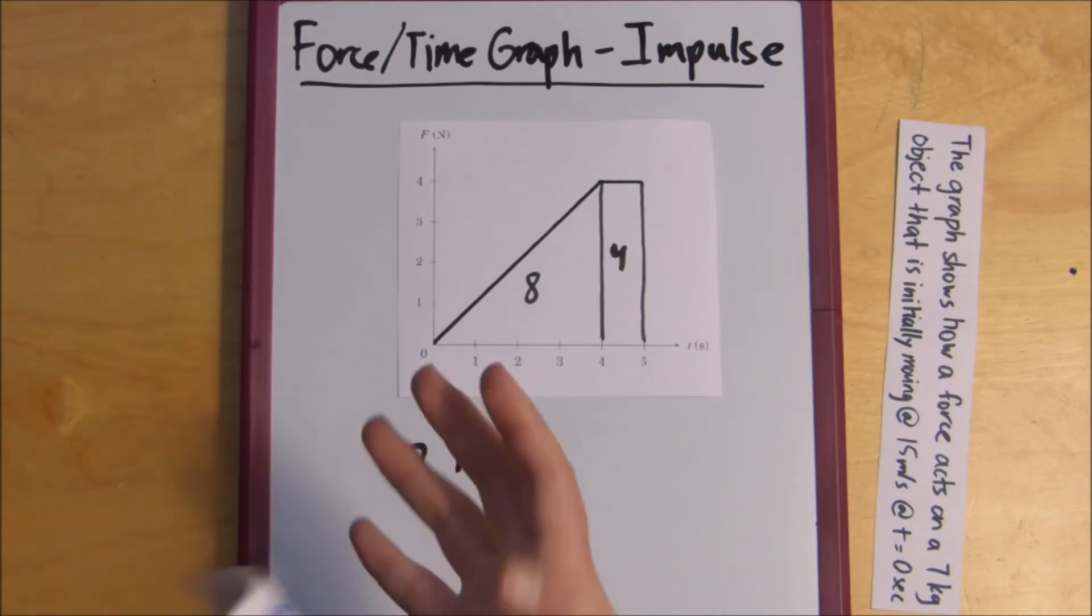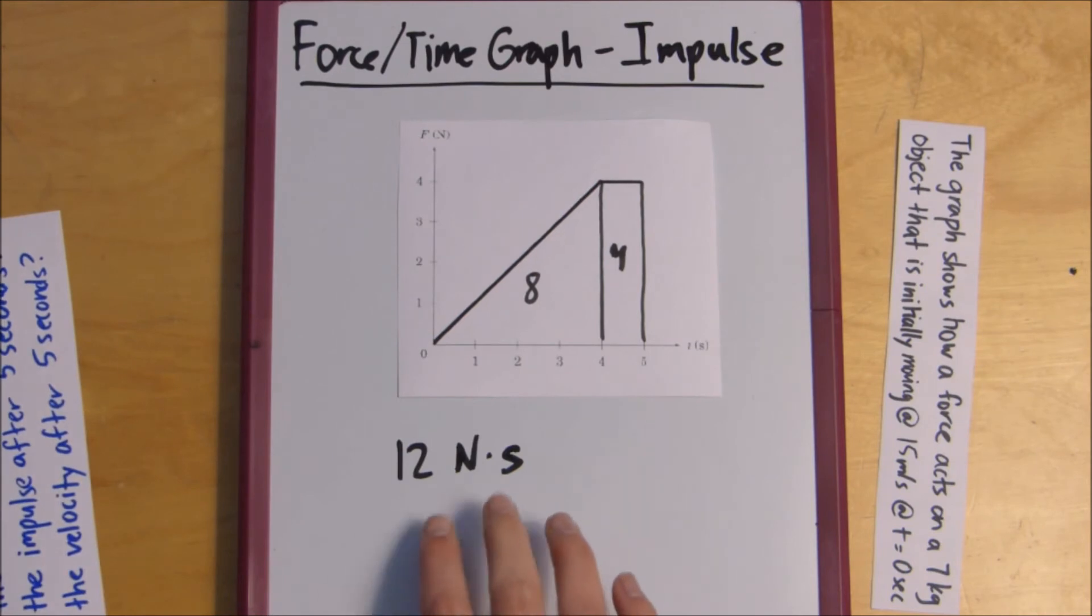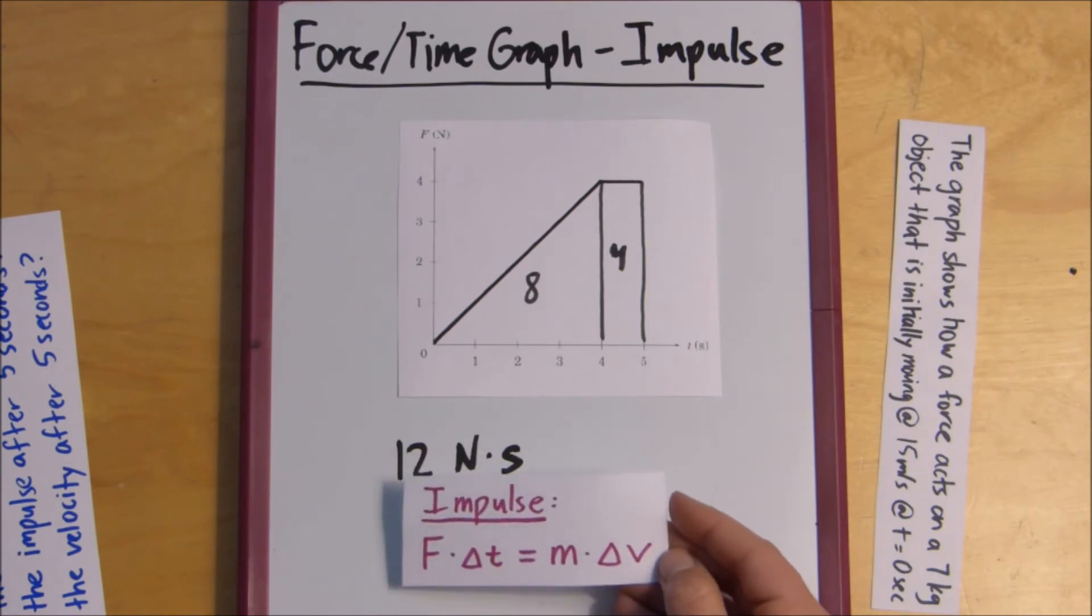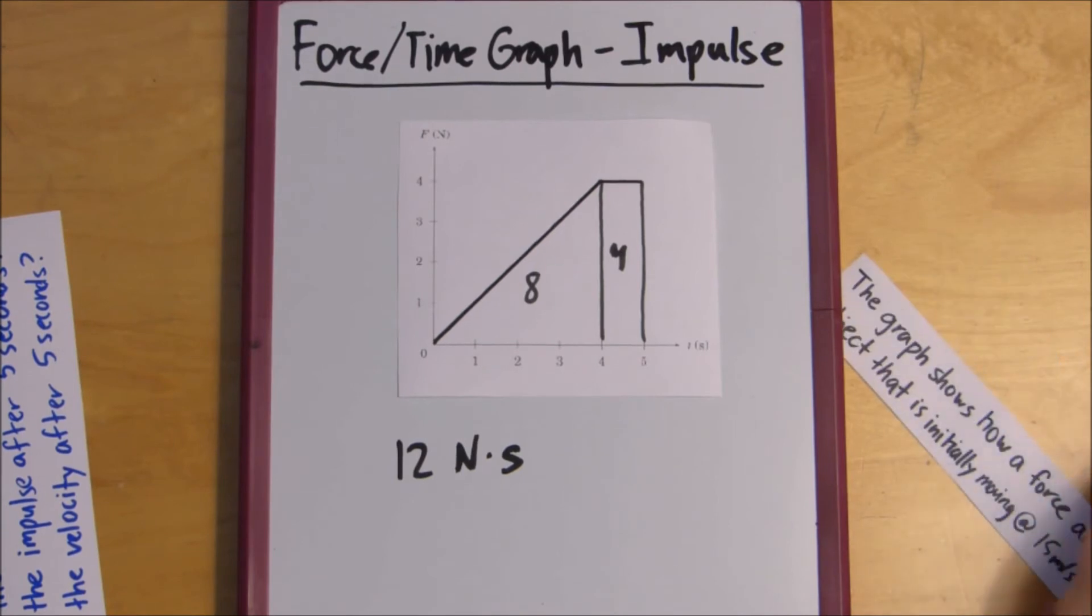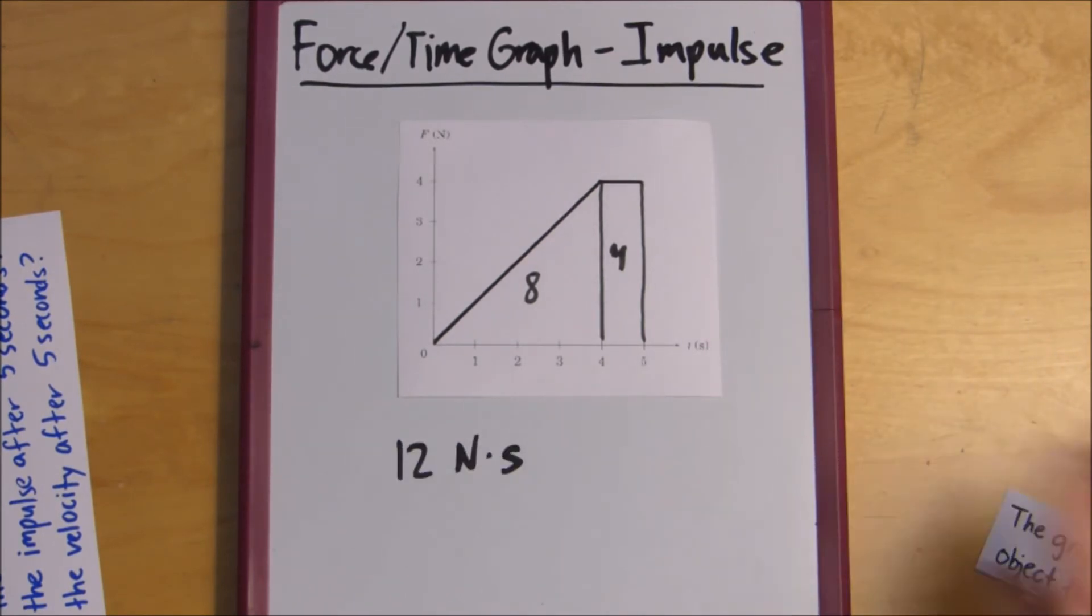So, now it asks for the velocity after 5 seconds. So, what we do is we take this impulse, we set it equal to the other side, we set it equal to mass times change in velocity, and then we use our original velocity to solve for the final velocity.